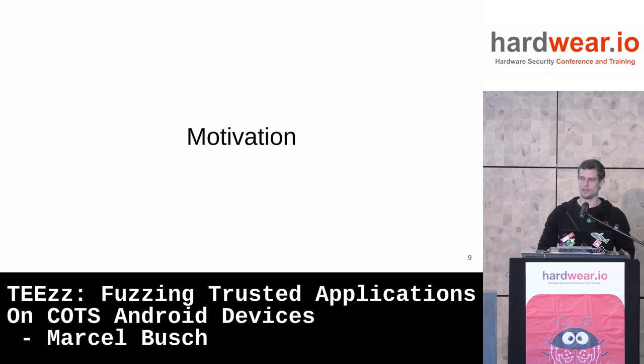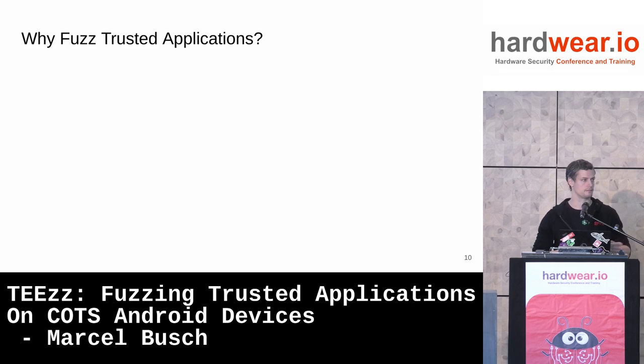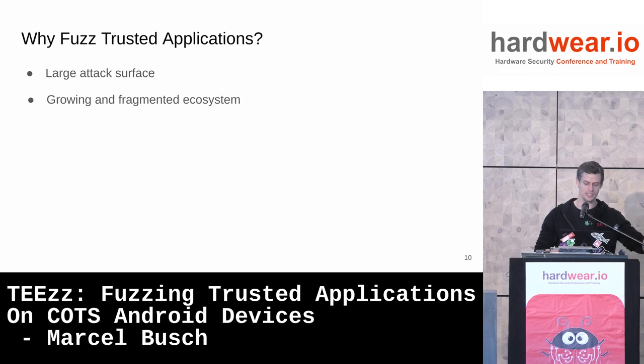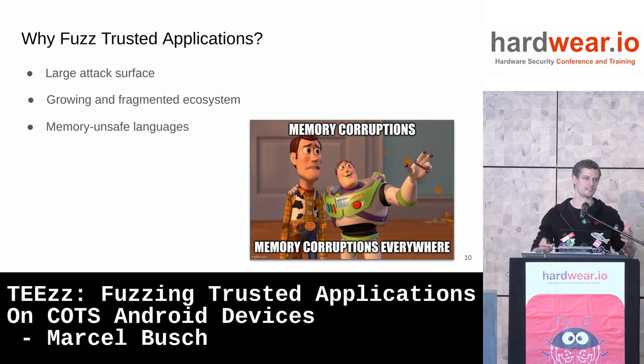So why are we interested in fuzzing these services? First, it's a pretty large attack surface, and it's a growing, fragmented ecosystem. Different phones have different TEE implementations, and sometimes even multiple implementations of the same thing are loadable into the trusted execution environment on a single platform. They're typically written in memory-unsafe languages, which suggests there are a lot of memory corruptions to find using fuzzing.